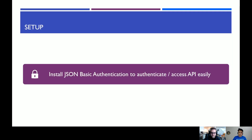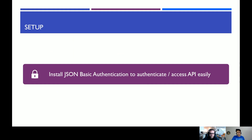One thing we need for this is to install a plugin called JSON Basic Authentication — it's available on GitHub and we'll put the URL in the video description. Go ahead and download the plugin and install it in your plugins directory in your WordPress blog. This does some encrypted authentication. You can do it without this if you know a lot of coding, but this is the citizen dev making it happen version.